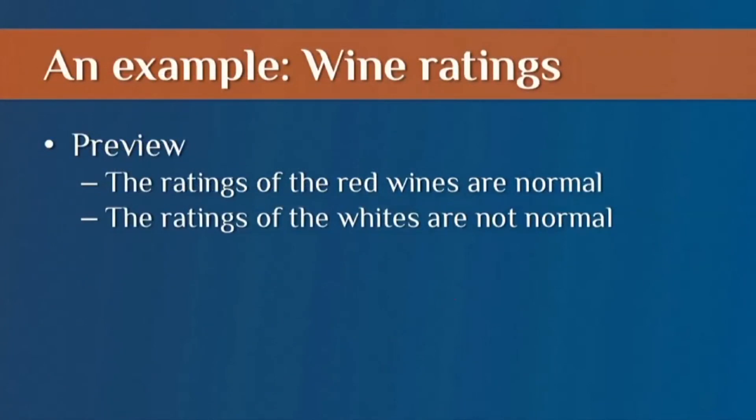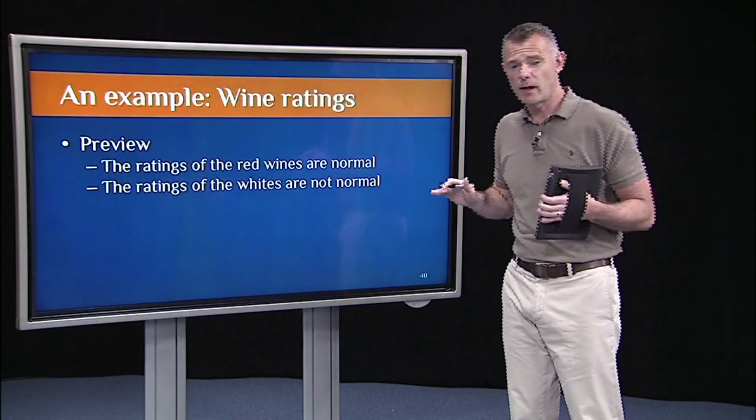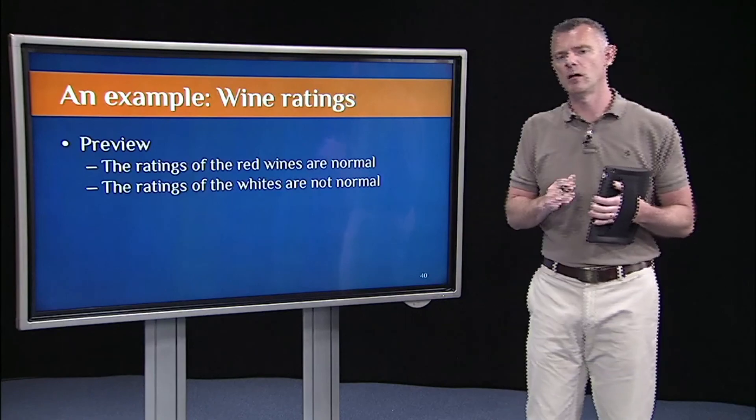Okay. To preview what we did, again, we just made up this example. We had a lot of fun making this example up. And we made it up so that the red wines, the distributions of the ratings, are normal in the red wines. But if you look at the ratings of the white wines, those are all not normal.